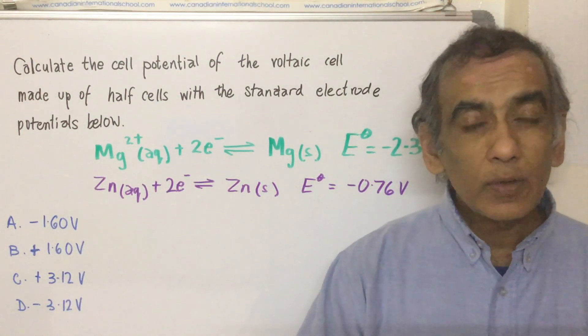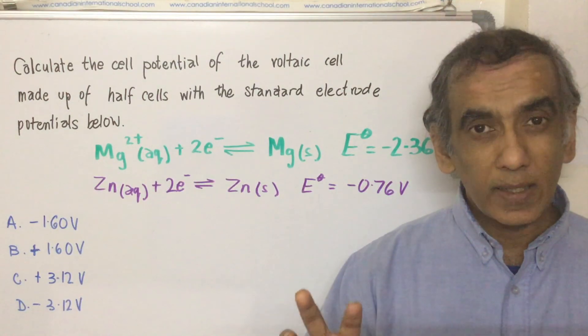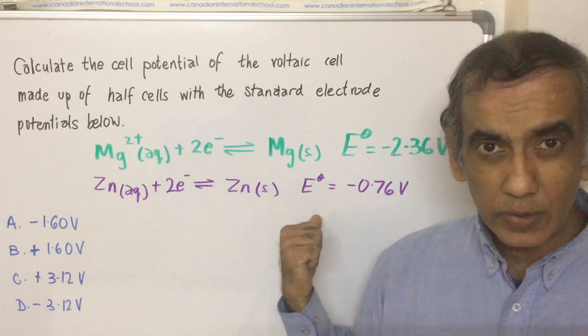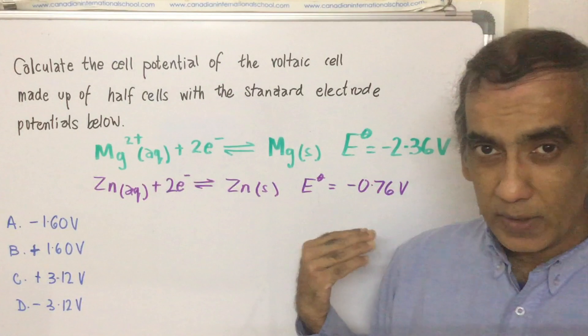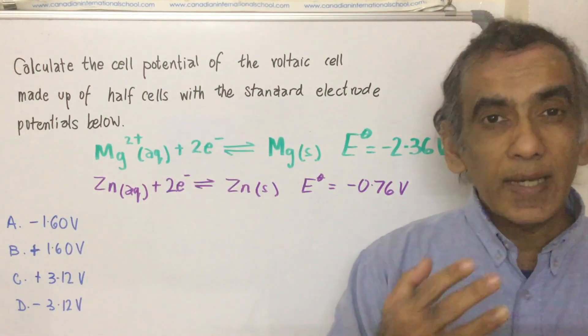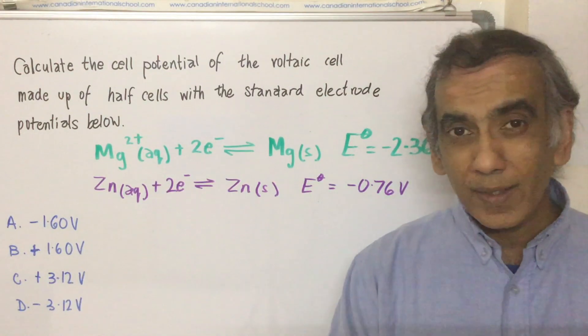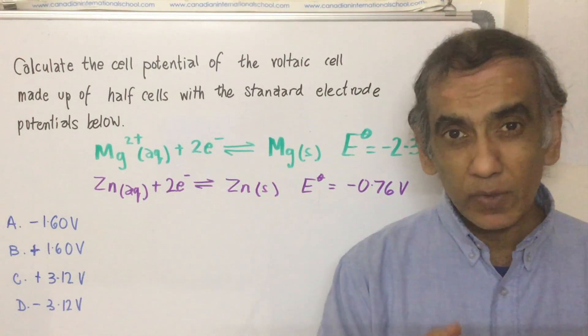Now how do you figure out which one has oxidation and which one has reduction? You look at these standard reduction potentials, and because everything is written as a reduction potential, then the entity that's going to be reduced is going to be the one that has the higher value for this standard reduction potential.